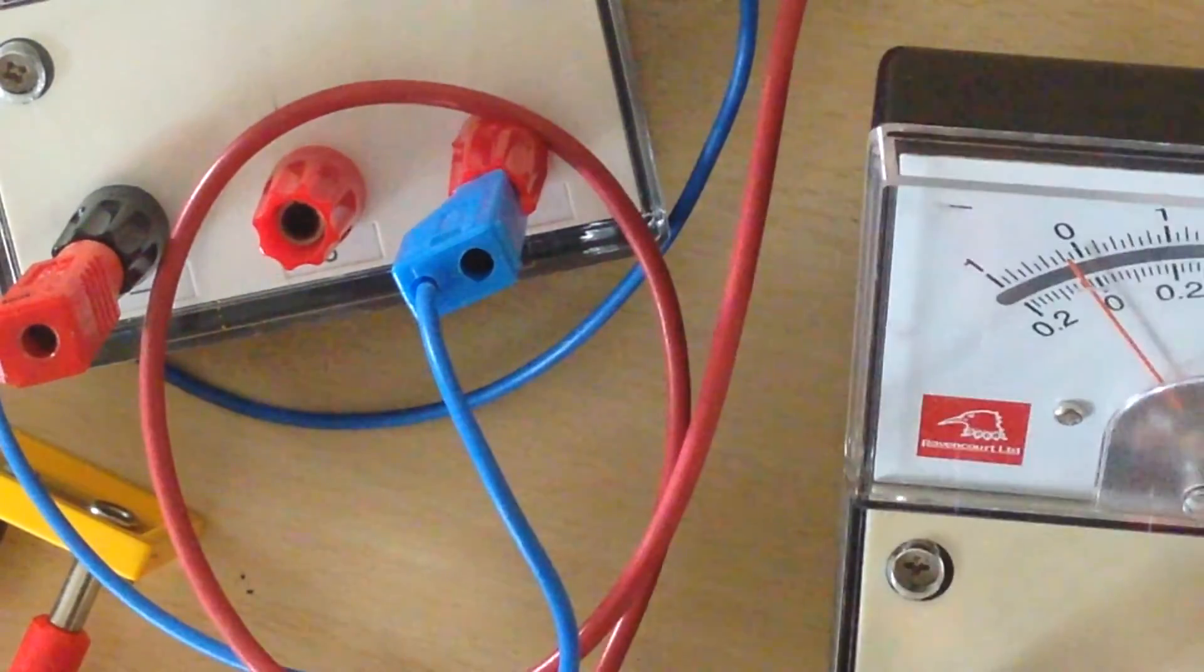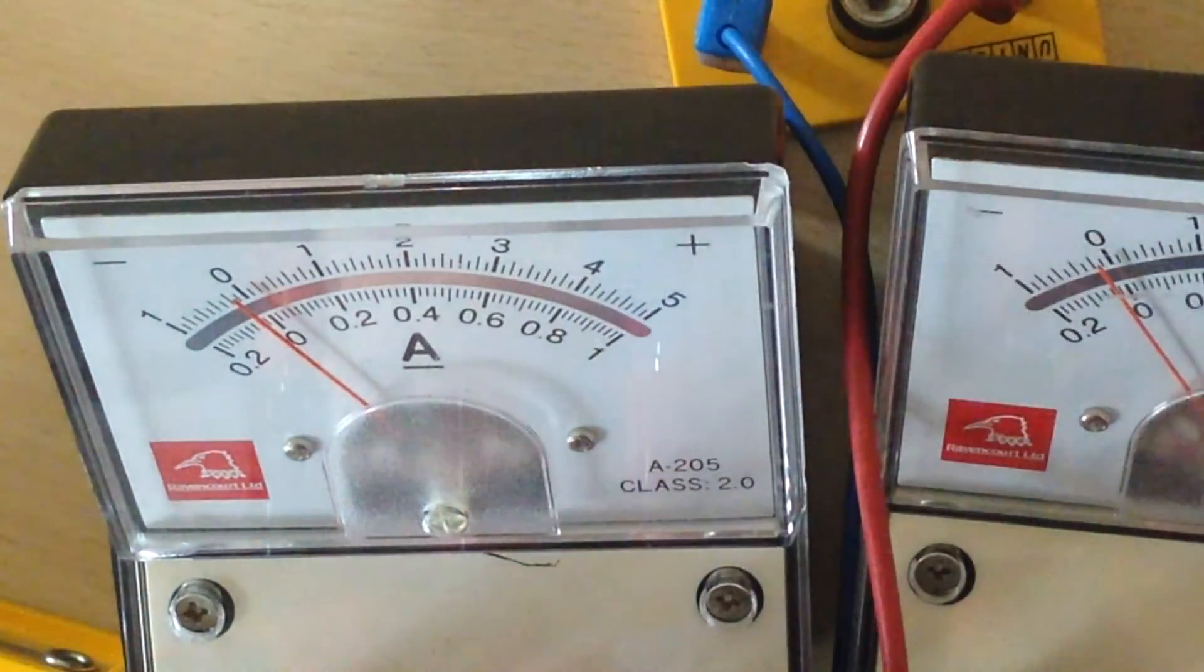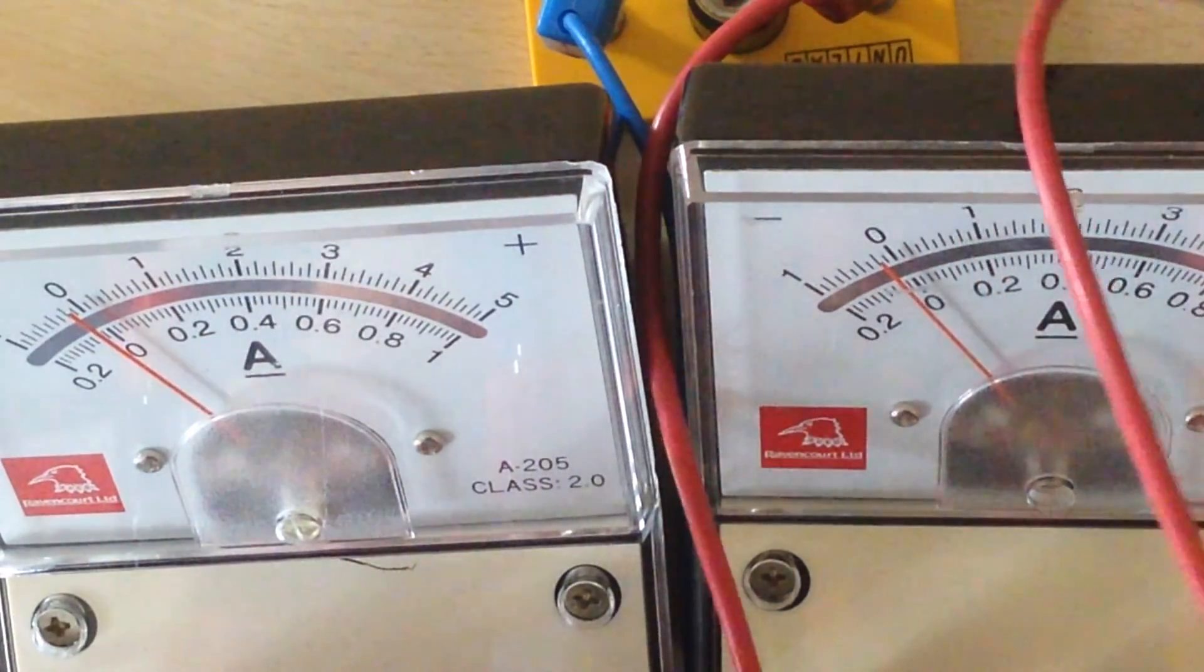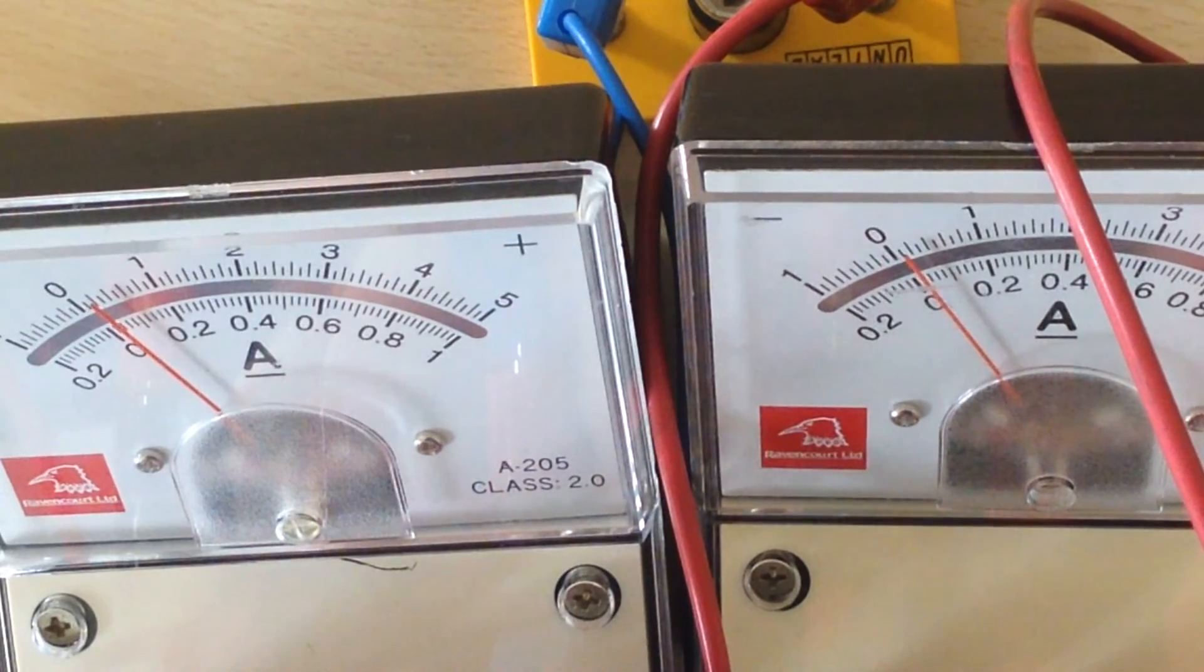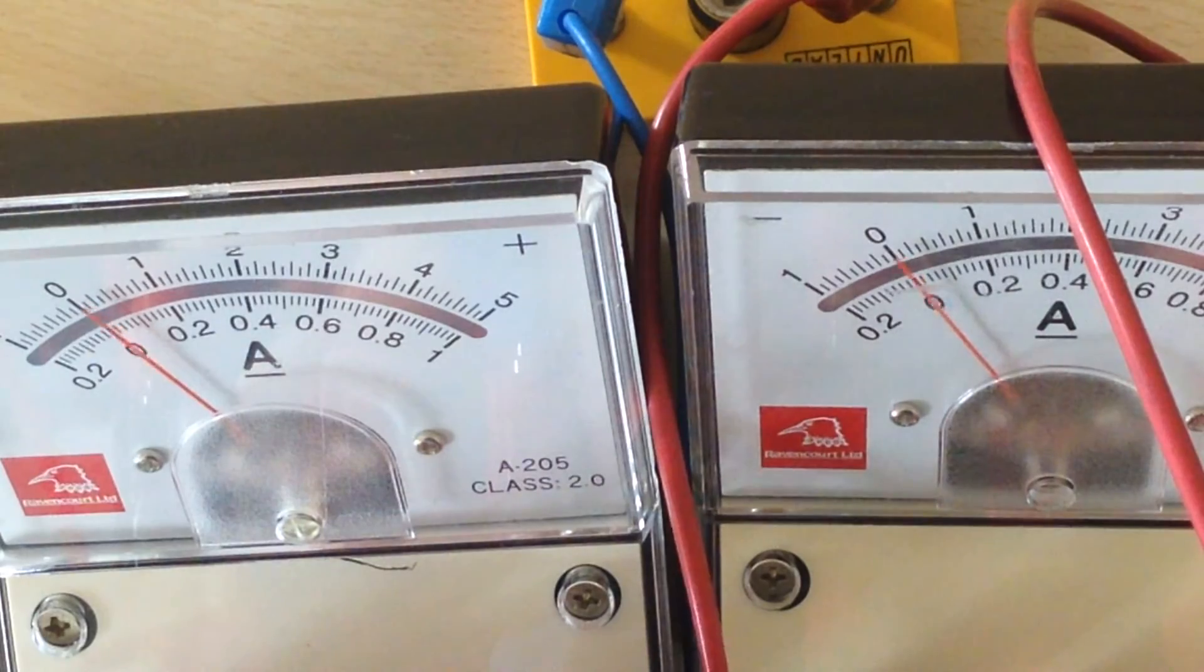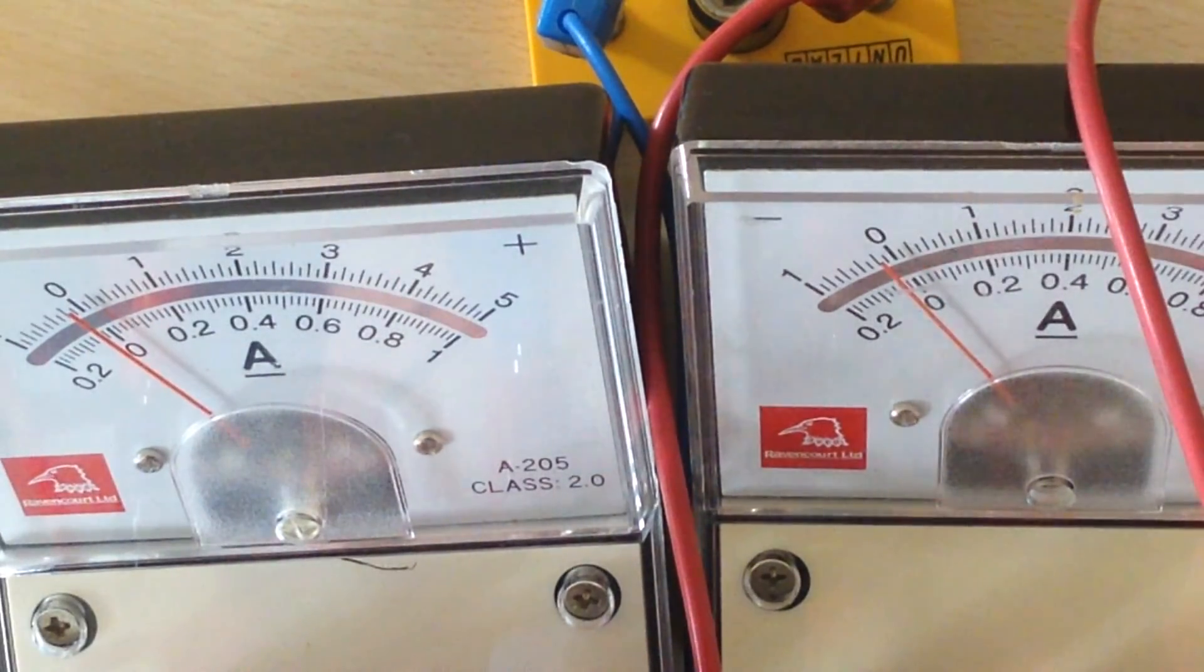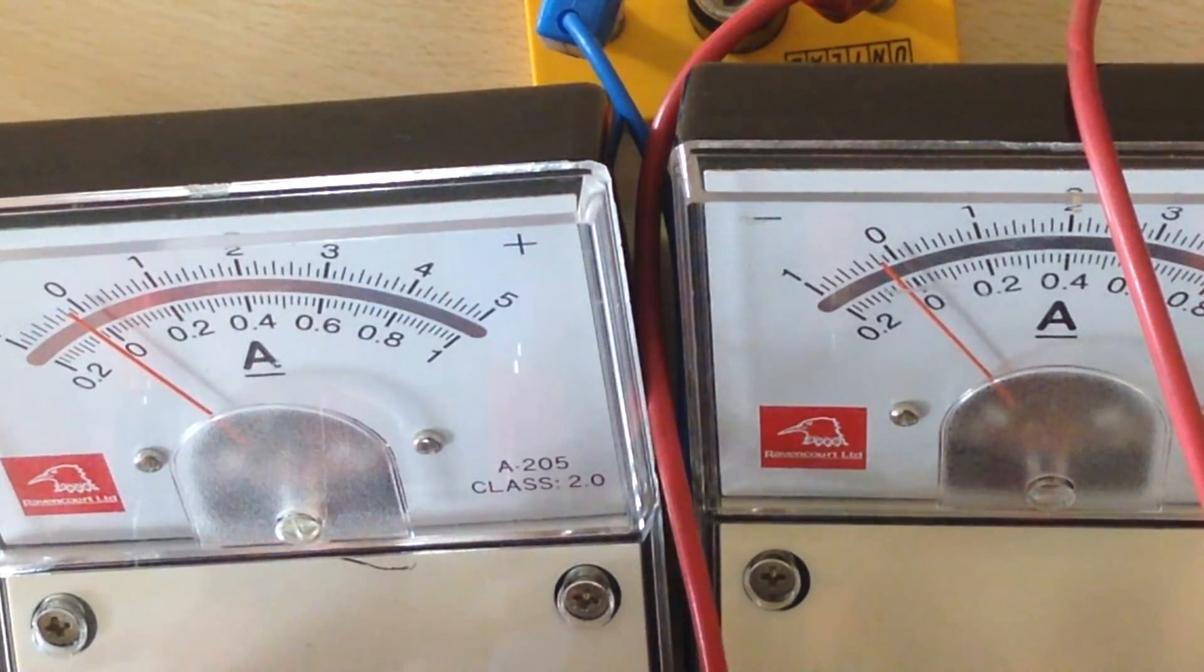So if I connect that up there, you can see that jumps a little bit. I'll bring the other ammeter in so that, there we go, both in shot. And they are both moving the same amount, showing in a series circuit the same current flows through no matter where we are.